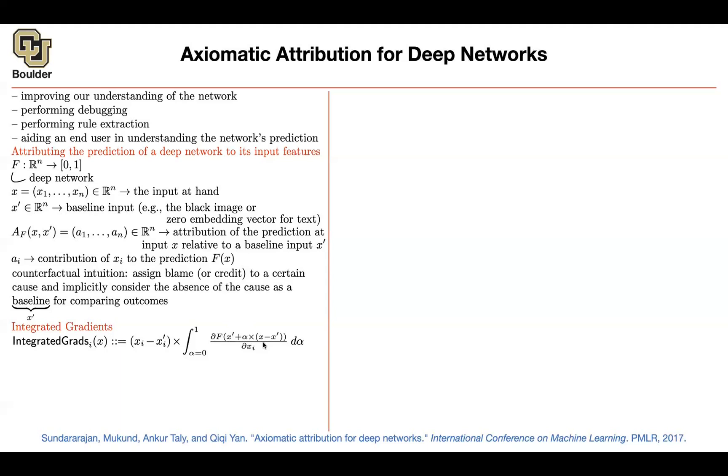You're going to take a look at the line between your baseline and your current input. So you have two images. One of them is a black image. The other one is the image that you want to analyze. You build a line between them, and then you're going to integral or integrate along that line. And you're integrating your gradients.